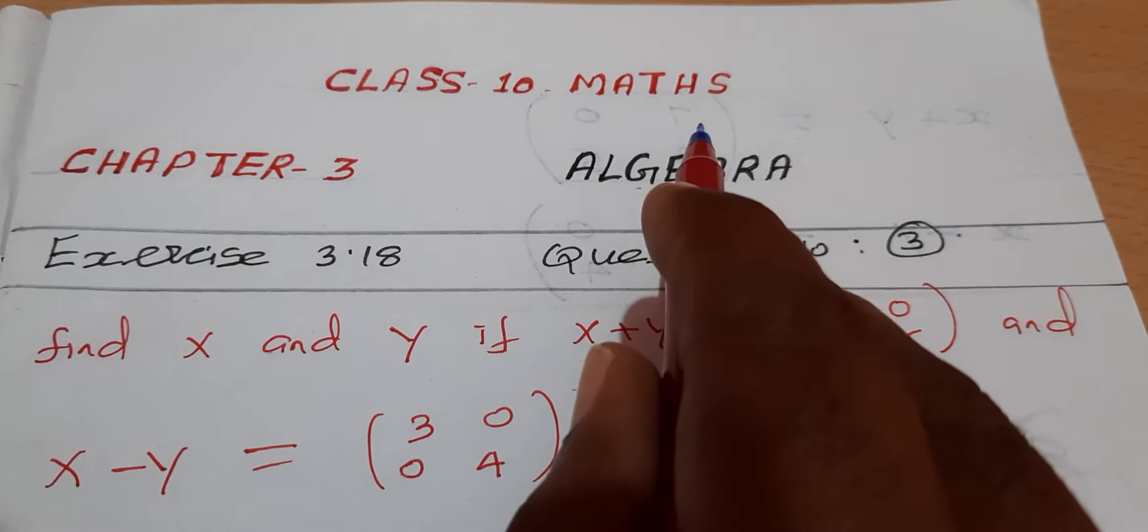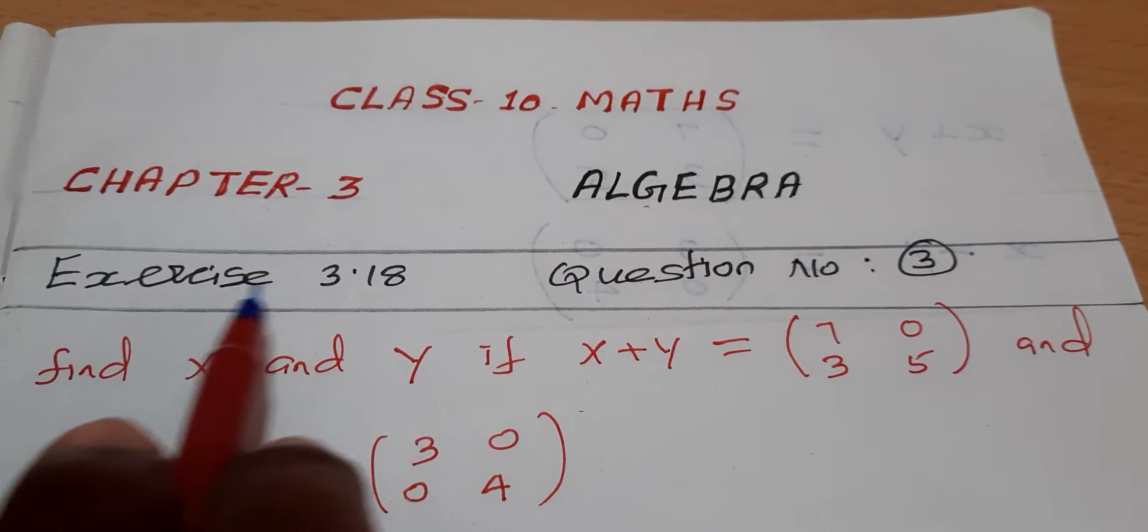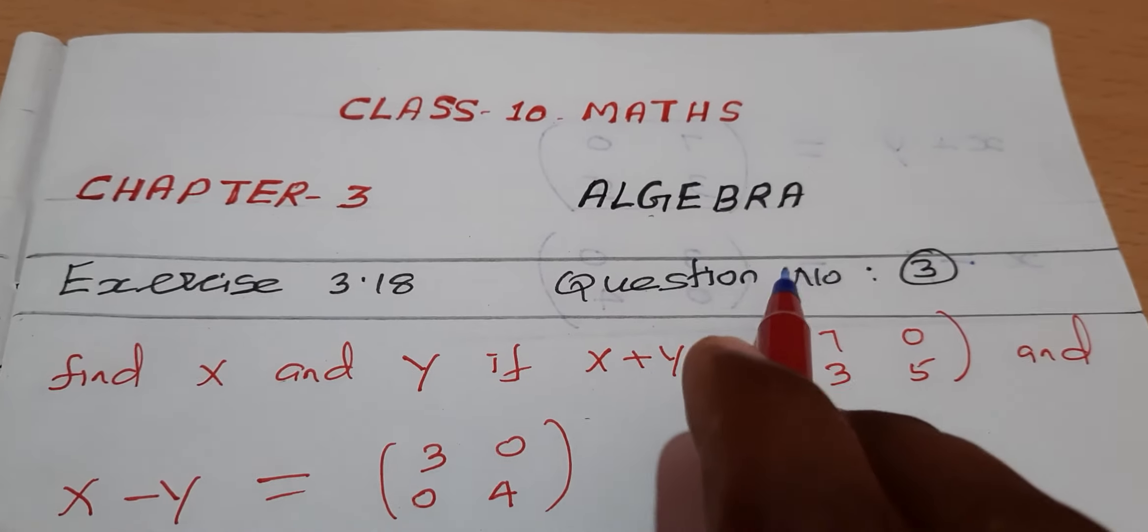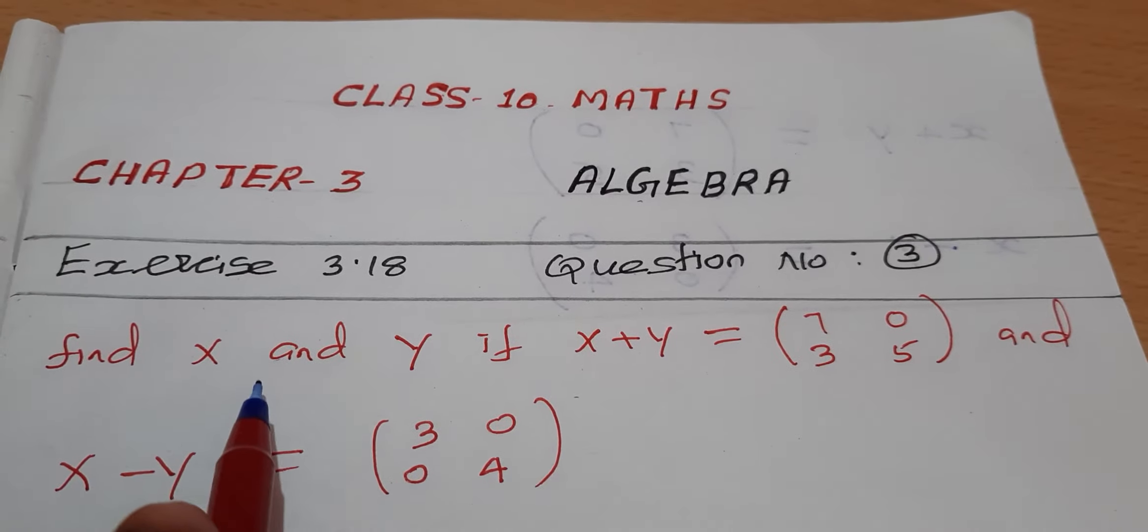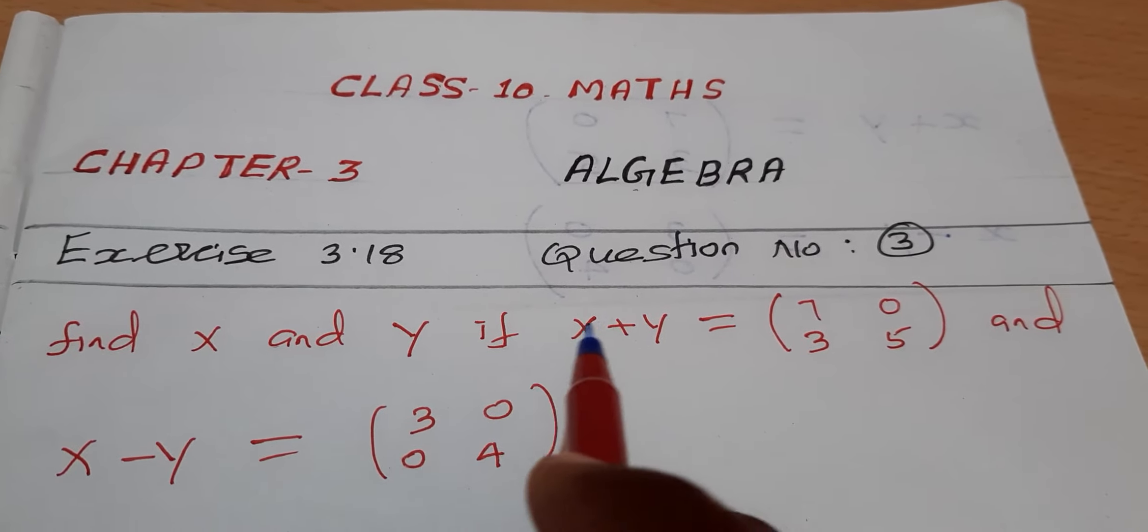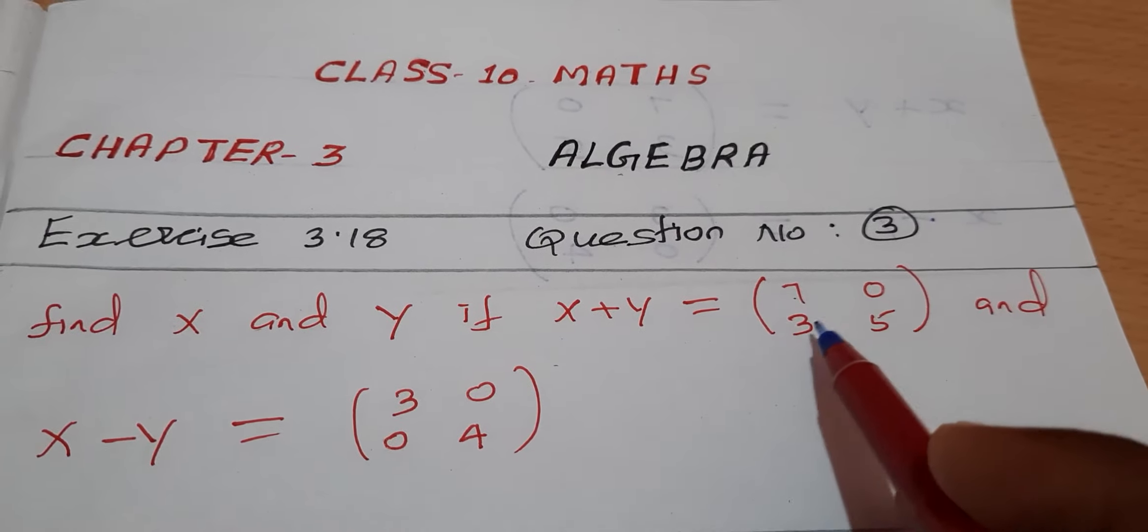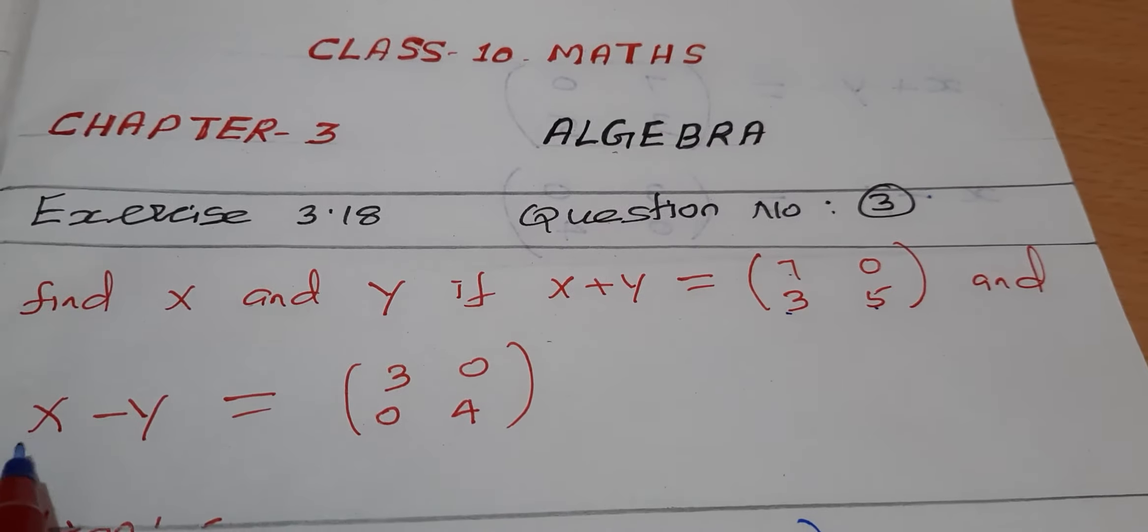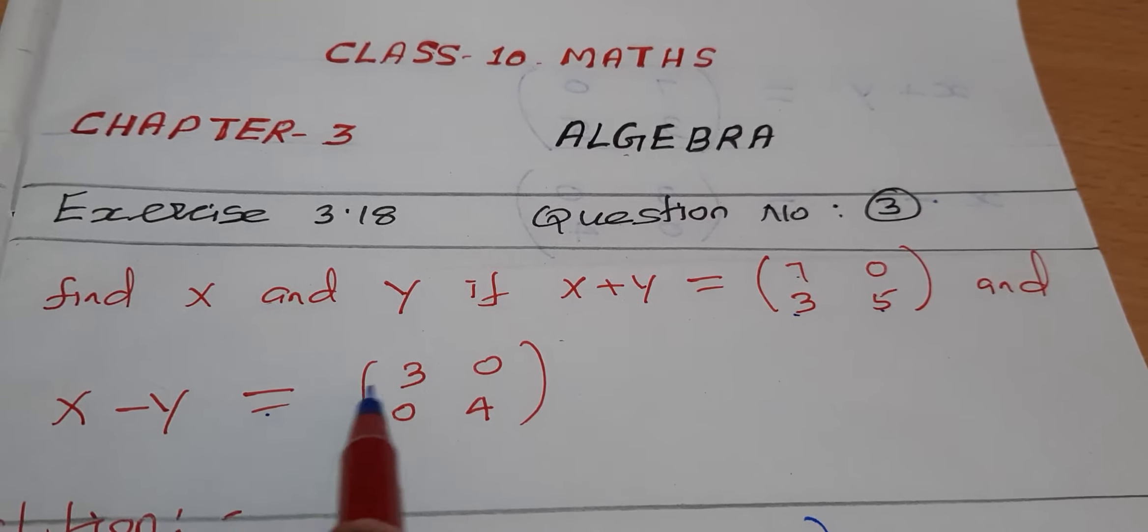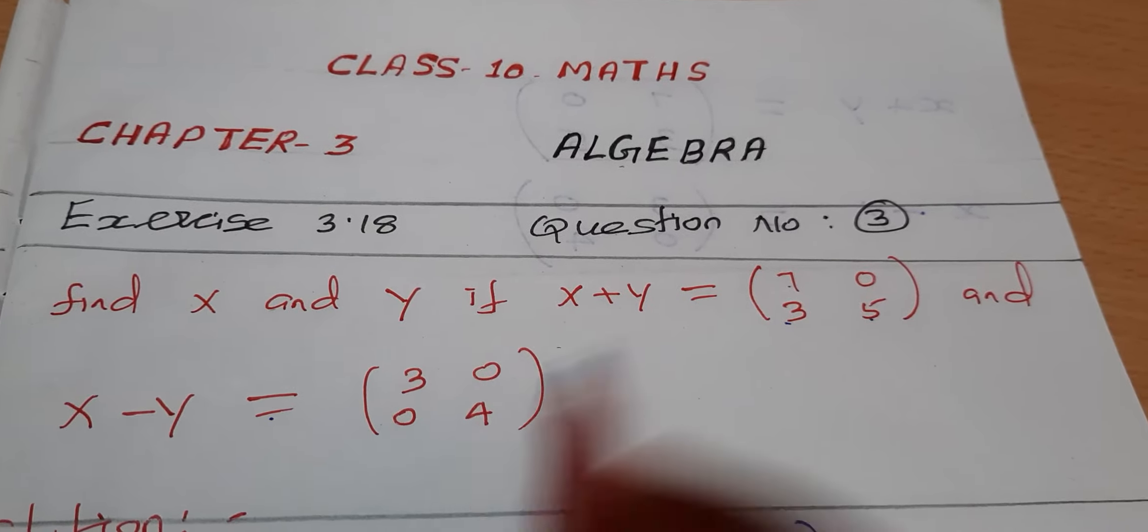Class 10th Maths, Chapter 3 Algebra, Exercise 3.18, Question Number 3. Find x and y if x plus y is equal to (7,0; 3,5) and x minus y is equal to (3,0; 0,4).